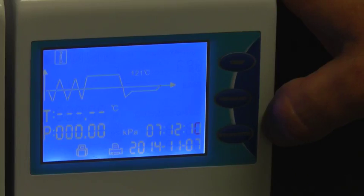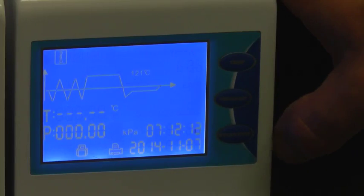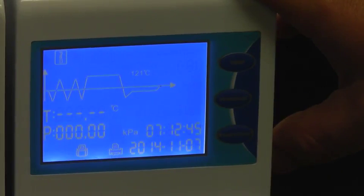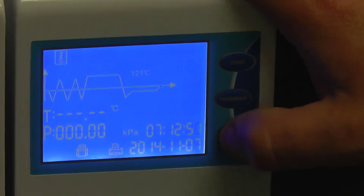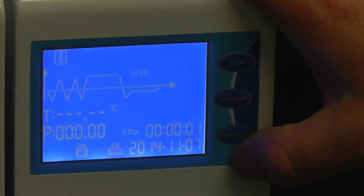The cycle at 134 degrees is faster than at 121. The sterilization time is approximately 4 minutes at 134, where it's approximately 15 minutes at 121. And as soon as you've selected your program, in a very simple next step, we just press the final button, which is the start-stop button, and that starts the sterilization cycle.